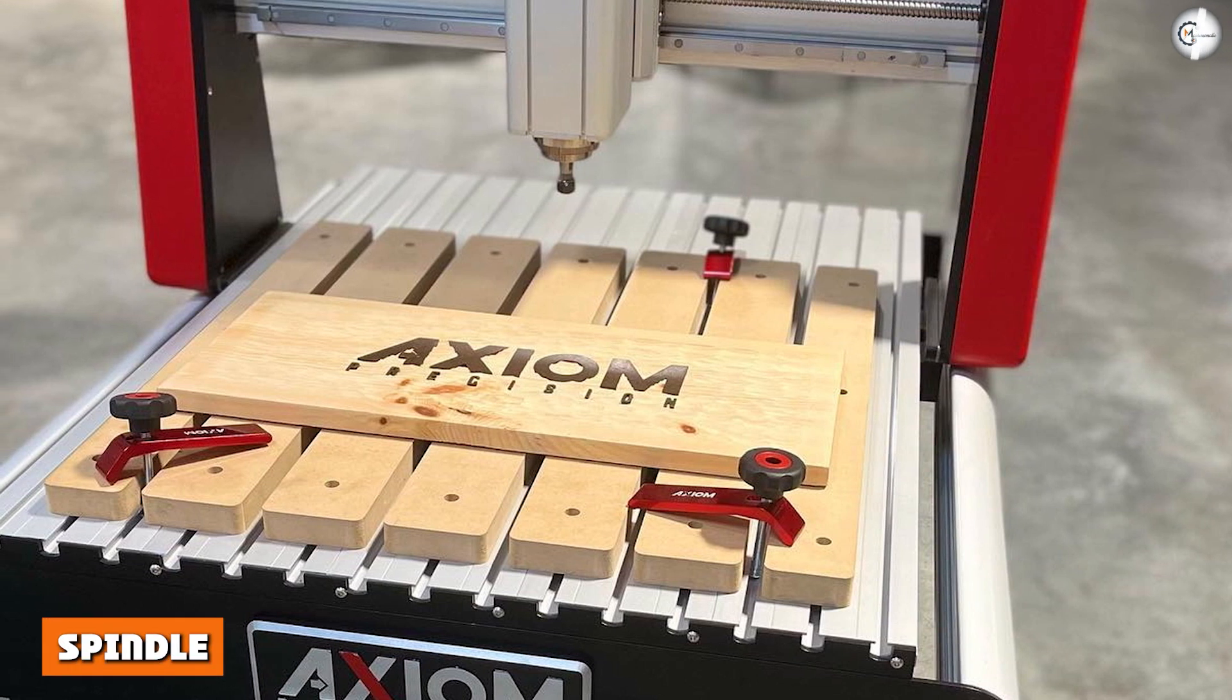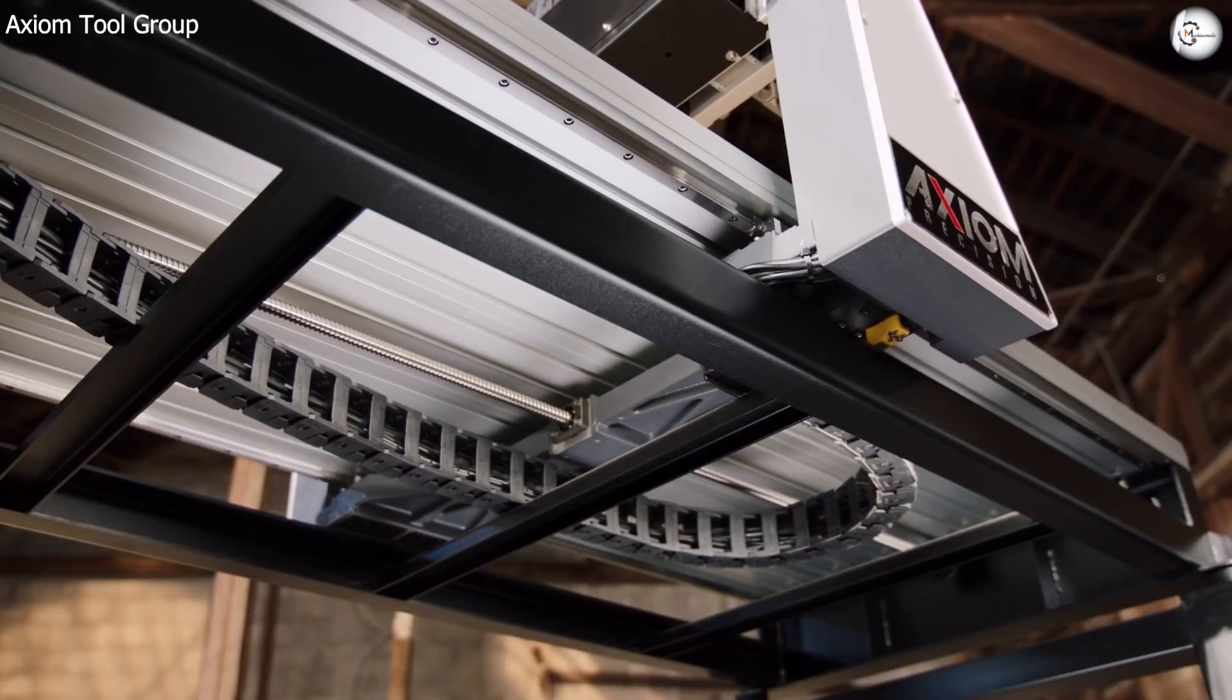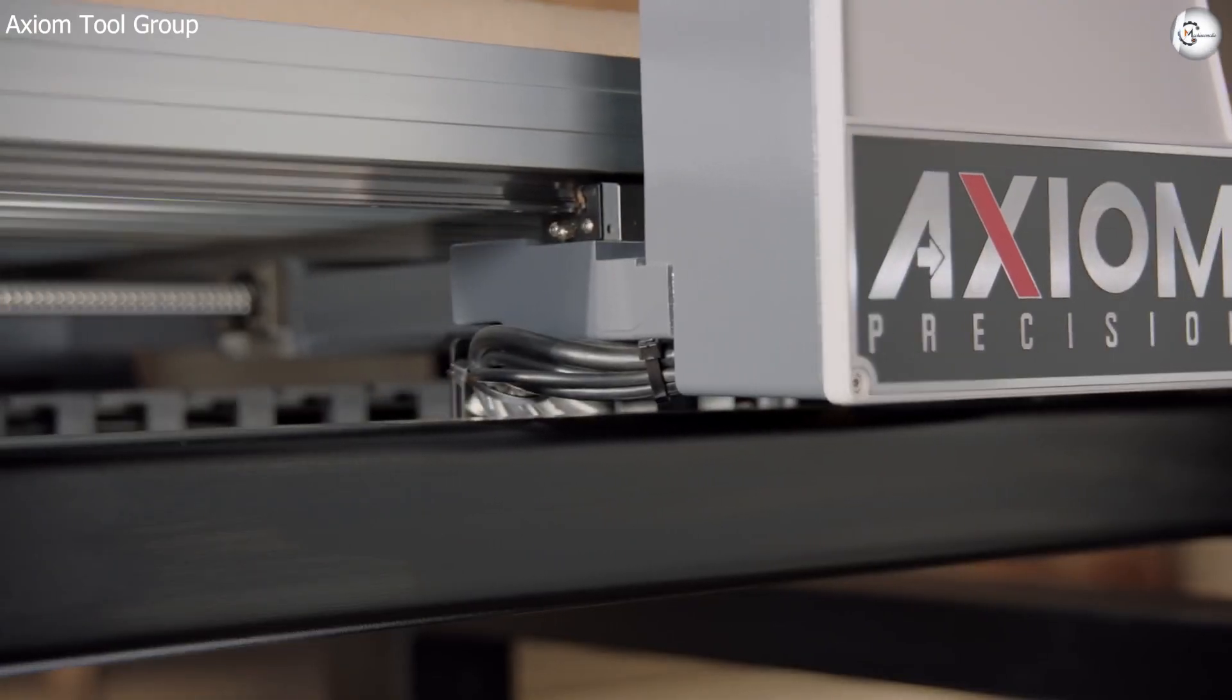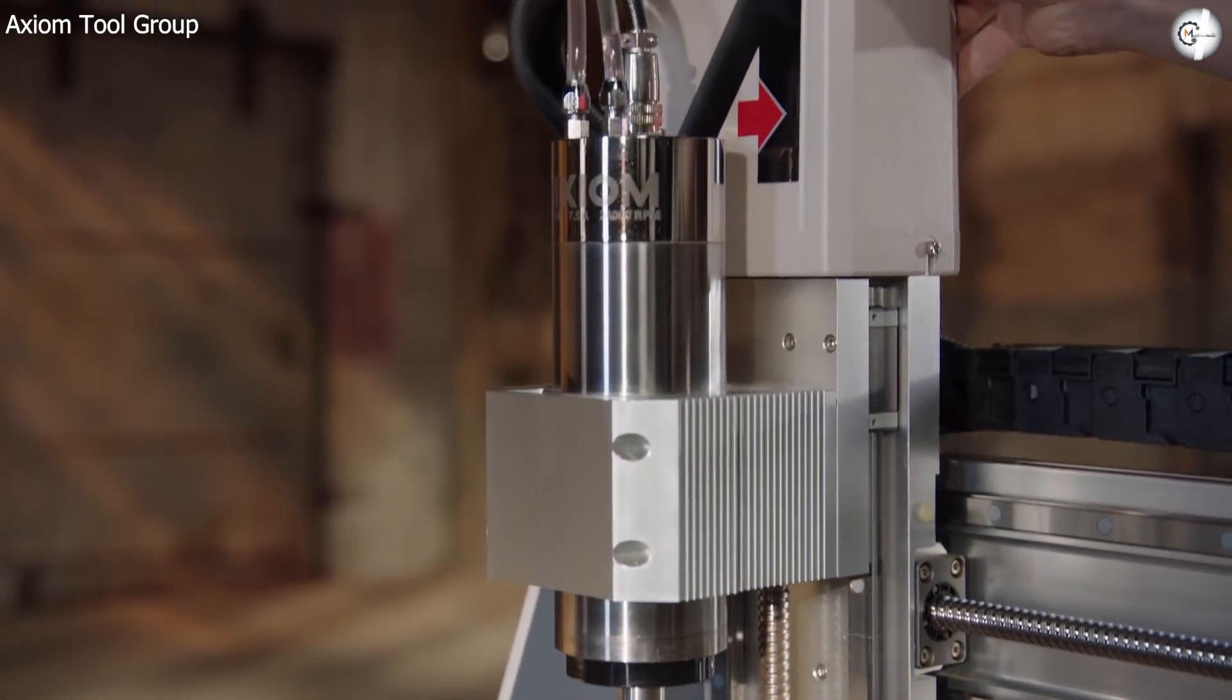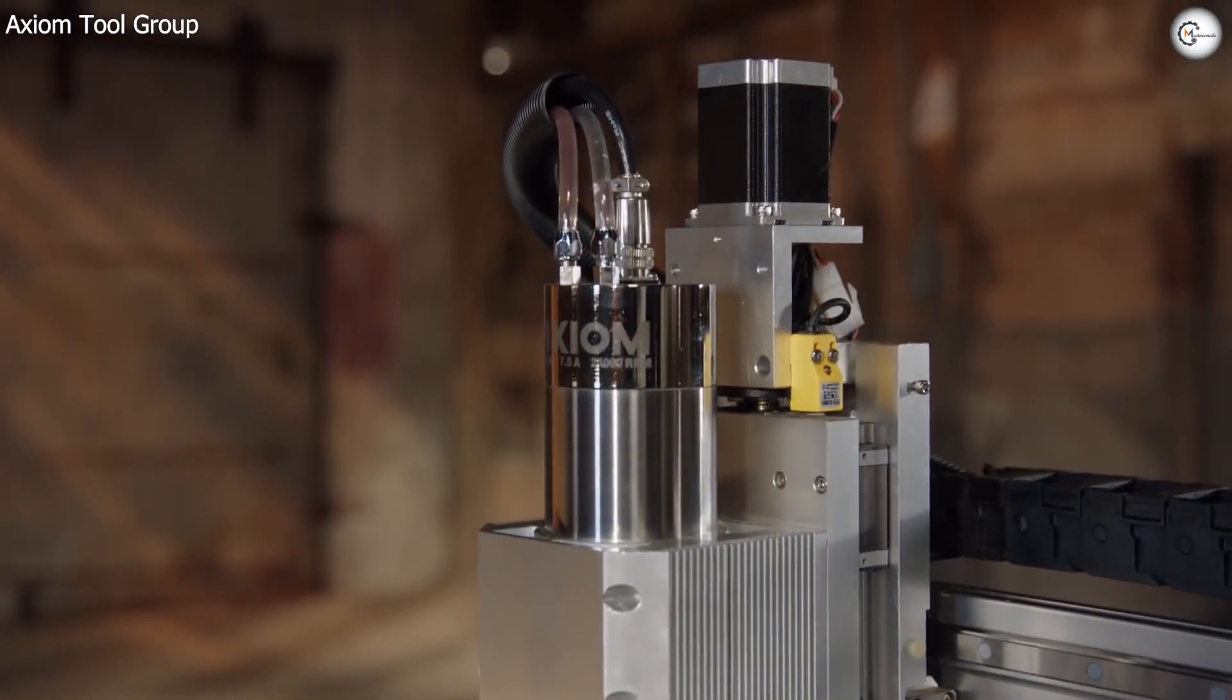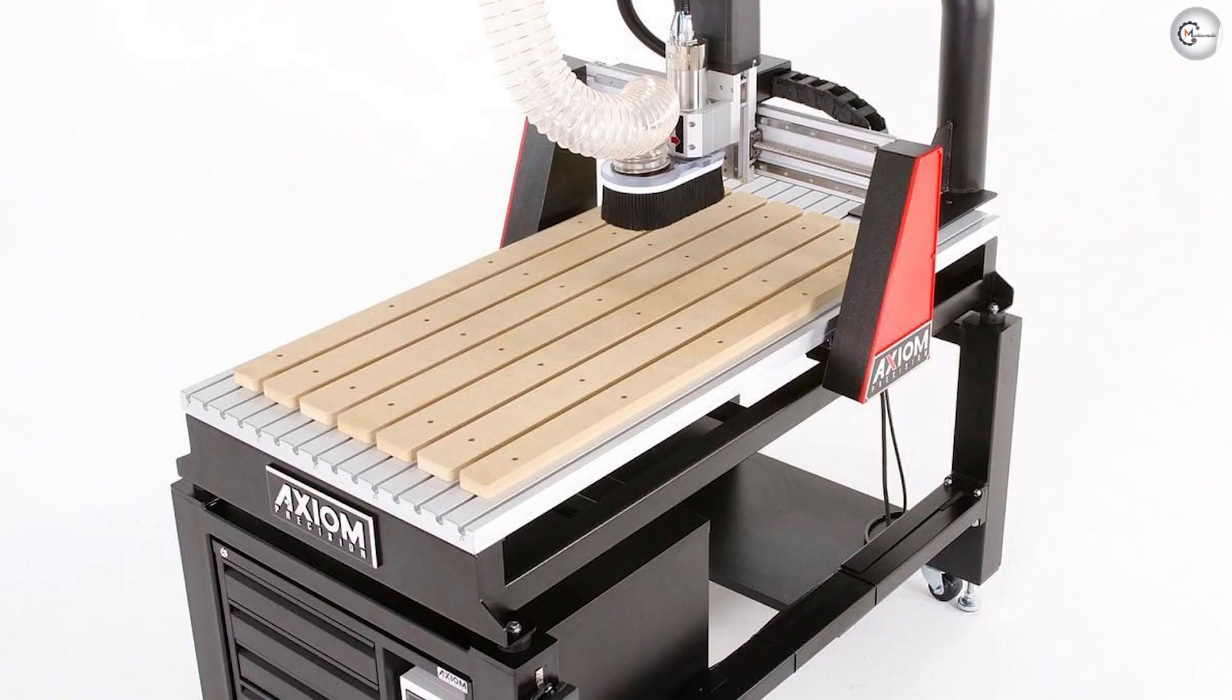Spindle. The Axiom PRO V5 uses a 3HP water-cooled electro spindle that has a variable speed range between 0 to 24,000 rpm. You can use it for prolonged durations as it is water-cooled. Additionally, water-cooled spindles are also quieter than air-cooled spindles. The spindle speed is controlled by the controller via VFD.